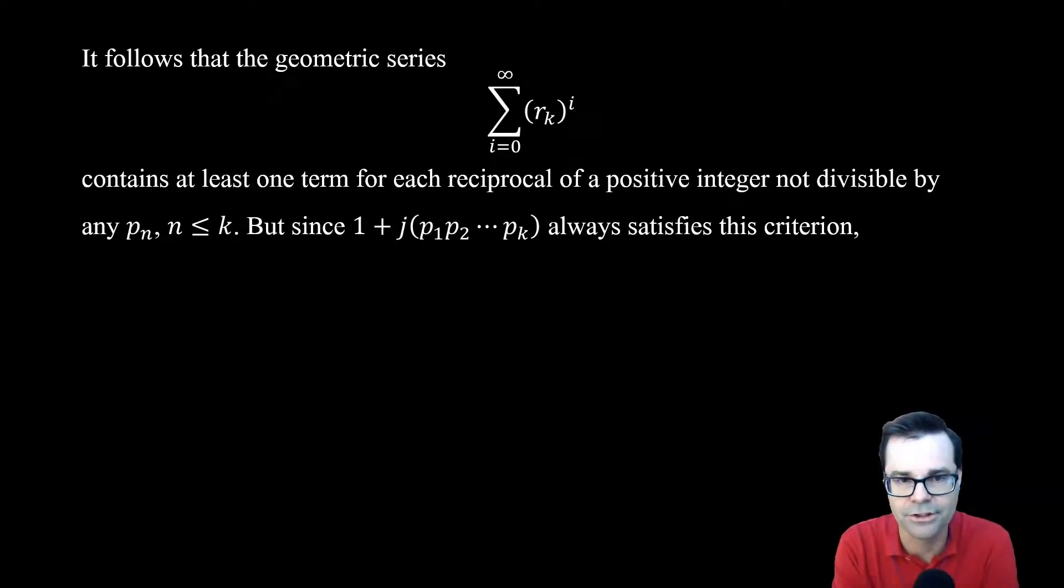But what we're going to do now is show that there's a nice set of integers that's never divisible by any of these. If we look at all the integers that are congruent to 1 mod p1, p2, up to pk, so congruent to 1 mod the product of the first k primes, then those integers look like 1 plus an integer times that product. So 1 plus j times p1, all the way up to pk. Those numbers are never divisible by any of those first k primes.